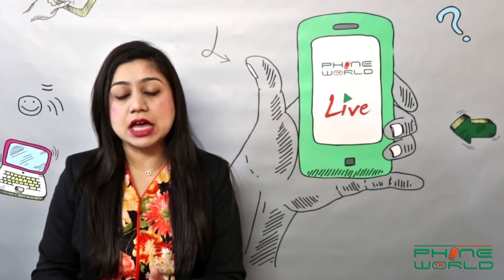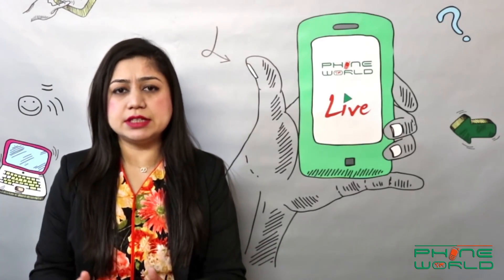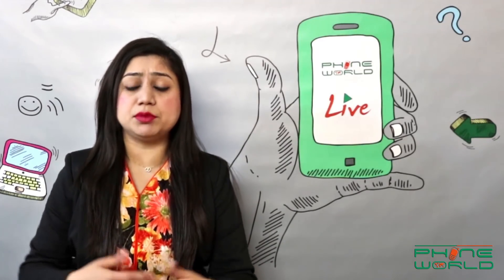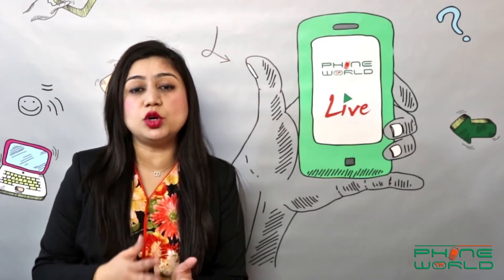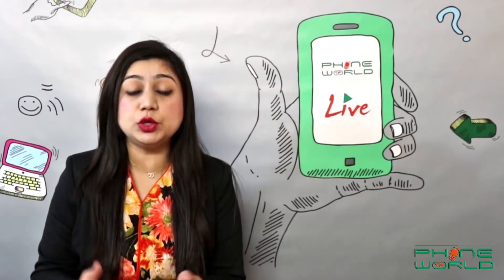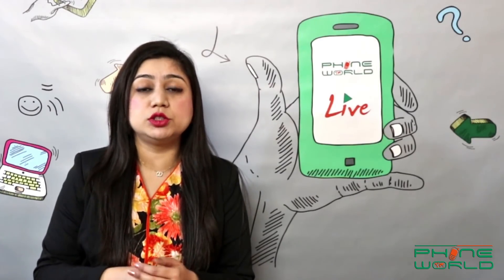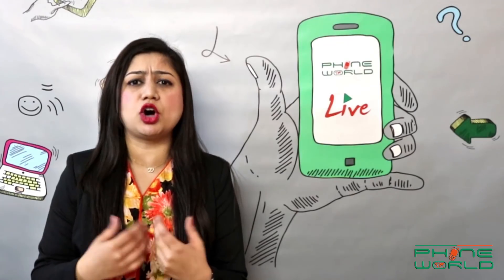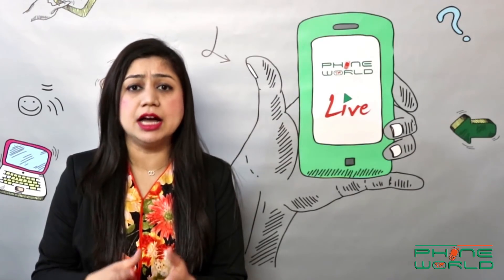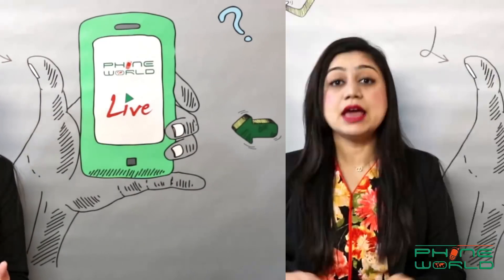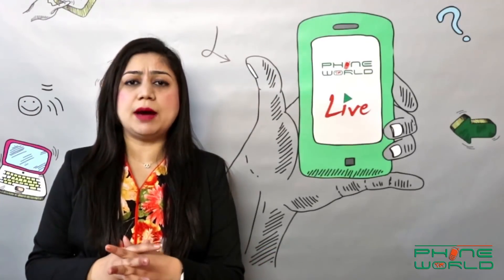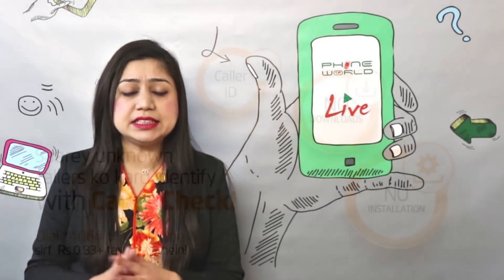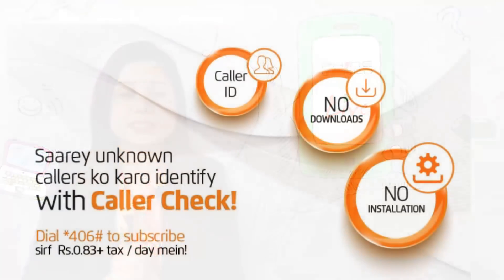This Caller Check Service is a type of service where when an unknown person calls you, you will have the caller ID. The service is really simple. And viewers, if you have seen this banner, it tells you that UFON has said you will get caller ID in this service.